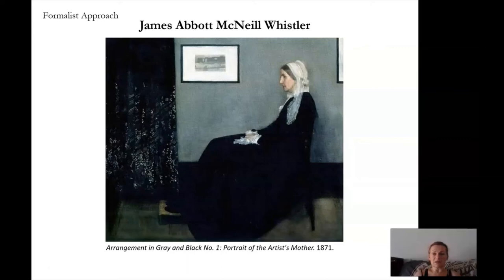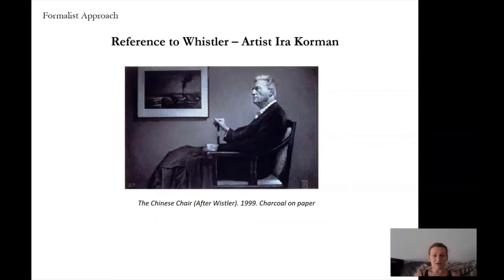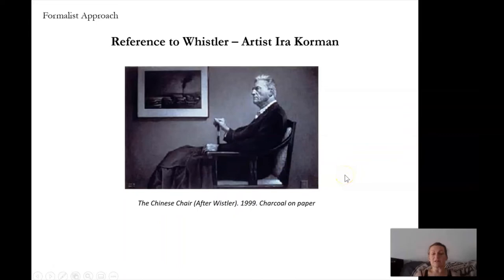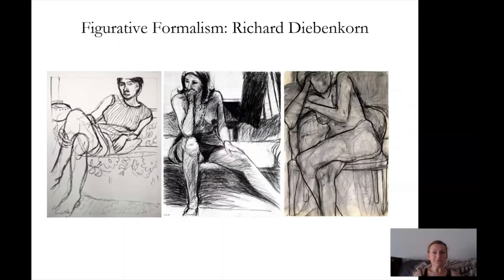The next painting I want to show is also formalist but includes a historical reference. It's by a contemporary artist — a very realistic drawing — where he has positioned his model in exactly the same position as Whistler's mother, using the same composition. This is a formalist approach where the artist even puts it in the title — he wants us to know he's doing it after Whistler. We call this homage, when an artist honors and includes a reference to another artist in their work. Another formalist artist is Richard Diebenkorn — he has multiple sketches. Look at his lines, all the erased lines. He draws one drawing, wipes it out, erases it, leaving the ghost image, and draws another drawing on top.